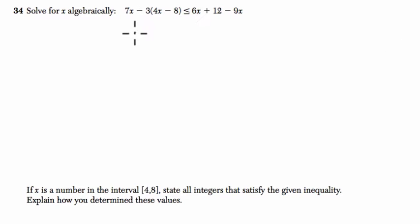They want us to solve for x and there's an inequality. So I'm going to just start by rewriting it. 7x minus 3 times 4x minus 8 is less than or equal to 6x plus 12 minus 9x.